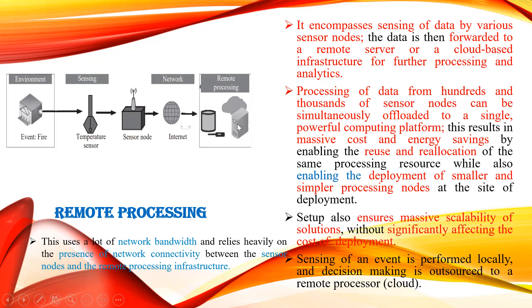Remote processing depends upon the presence of internet connectivity between the sensor node and the remote processing infrastructure. Data sensed by various nodes is forwarded to the remote server through cloud. Processing data from hundreds to thousands of sensor nodes can be simultaneously offloaded onto a single platform. This enables energy saving, data security in one place, and reuse and reallocation of processing resources, ensuring maximum scalability while affecting deployment cost.